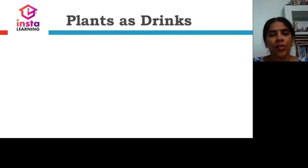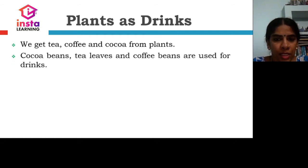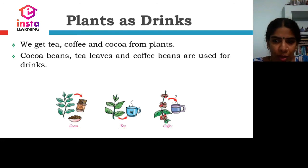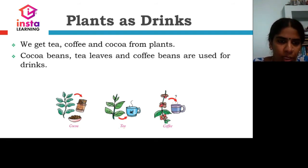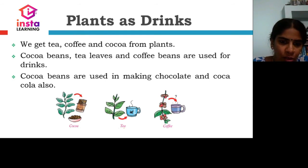Plants as drinks. We get tea, coffee, and cocoa from plants. Cocoa beans, tea leaves, and coffee beans are used for drinks. Beans are nothing but seeds. From cocoa beans we get cocoa. Tea leaves help to prepare tea. Coffee beans, when crushed, we get coffee powder and then we get the drink. We can also prepare cocoa chocolates and cocoa drinks. Cocoa beans are used in making chocolate and Coca-Cola as well.